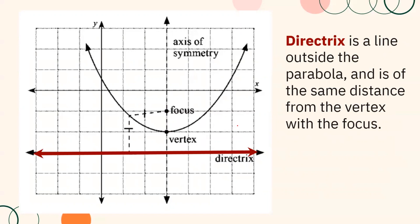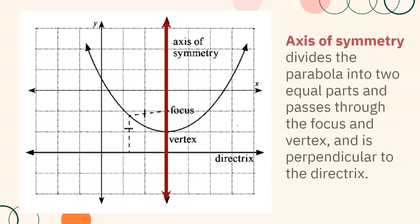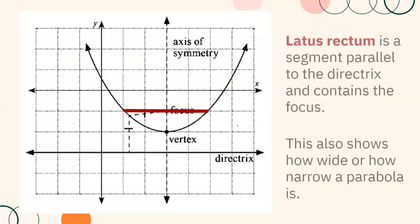The directrix is a line outside the parabola and is the same distance from the vertex as the focus. It is also known as the fixed line. The axis of symmetry divides the parabola into two equal parts, passes through the vertex and the focus, and is perpendicular to the directrix. The latus rectum is a segment parallel to the directrix and contains the focus — it also shows how wide or narrow a parabola is.